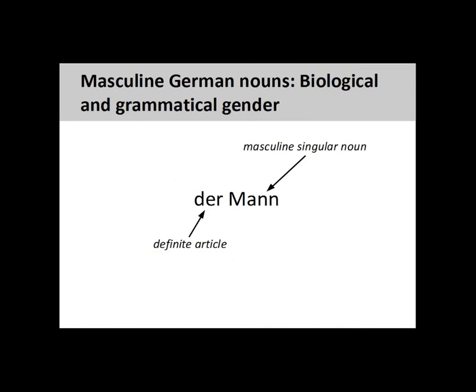You will recall from the presentation on German nouns that all singular nouns have a grammatical gender. This gender can be seen in the definite article. Here, the biological gender of the noun 'man' (Mann) agrees with its grammatical gender. The definite article 'der' shows that this is a masculine singular noun.